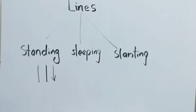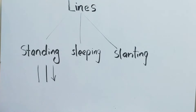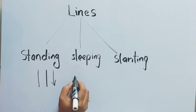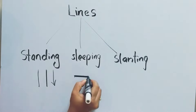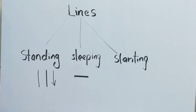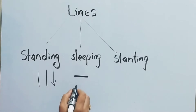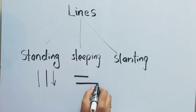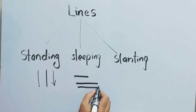Then the next one, sleeping line. Draw a straight line from side to side. It is also called a horizontal line.